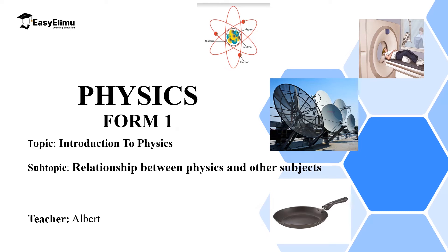Hello students, welcome to ECLIMU Learning Simplified and welcome to this lesson. In the previous lesson we discussed branches of physics and we said physics can be categorized into six main branches: mechanics, waves, geometrical optics, electricity and magnetism, thermodynamics, and atomic physics.